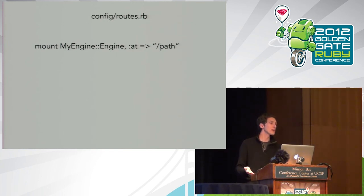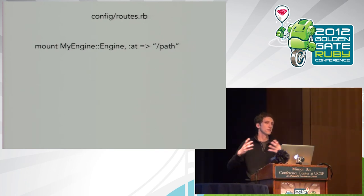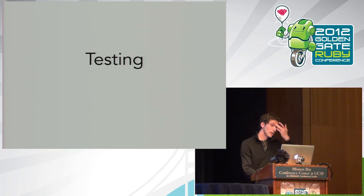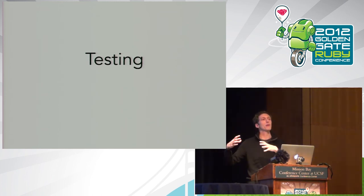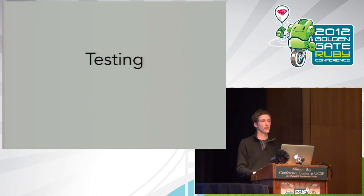Users mount your engine in their application's routes file using `mount MyEngine::Engine, at: '/some_path'`. For example, Rails admin is often mounted at `/admin`. If they already have that route for something else, they can simply choose a different path — you can run two engines covering the same responsibility with custom routes. Testing engines is a little tricky: the best practice is to create a dummy application inside your test directory, mount your engine into it, and test that dummy application.